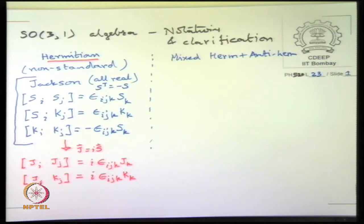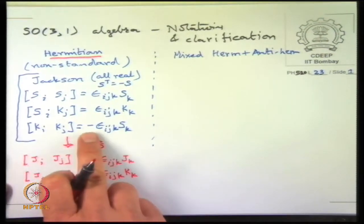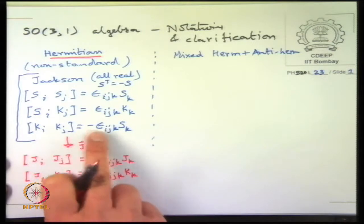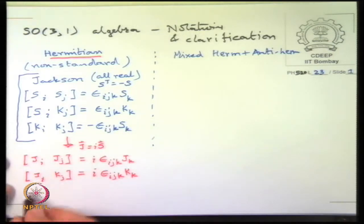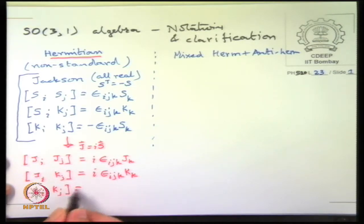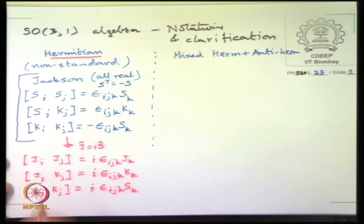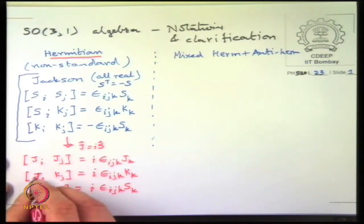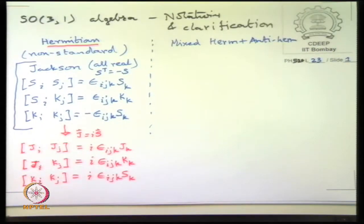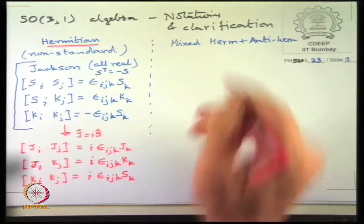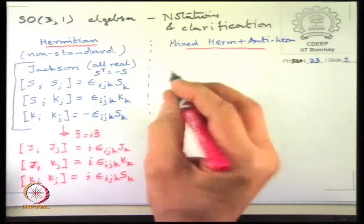The result is [K_i, K_j] = i epsilon_{ijk} S_k. Now if I did this I got into trouble, because after this if I do (J + iK)(J − iK) it does not work. The thing that does work is the mixed Hermitian and anti-Hermitian formalism followed in quantum field theory literature.